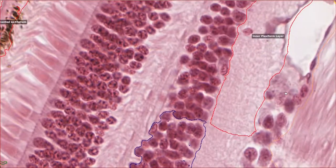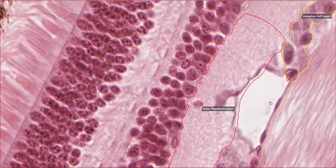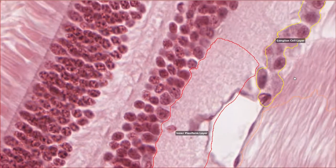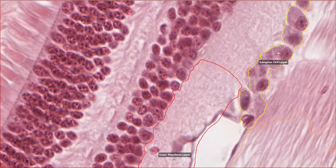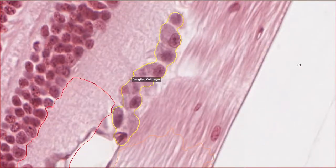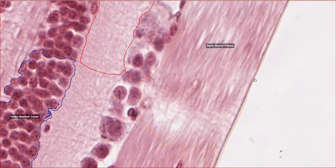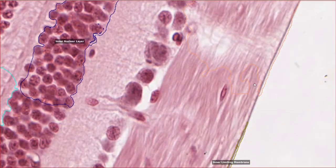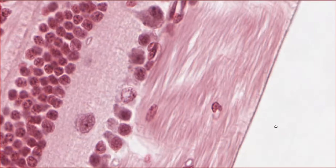Next up there's the inner plexiform layer. This contains axons from the integrating neurons forming synapses with dendrites from the retinal ganglion cells. So you won't be surprised to hear that the next layer up is these lovely big neural cells. This is the ganglion cell layer and contains the cell bodies of the retinal ganglion cells. And then the final layer, just above that, are the optic nerve fibers. This layer contains the axons of the retinal ganglion cells, which travel in the optic nerve to the brain. You'll notice that these fibers are non-myelinated. Again, that's to prevent interference with light, which has to pass through all of these layers to reach the photoreceptors before it's detected.